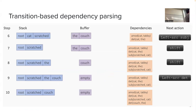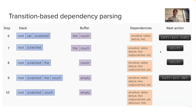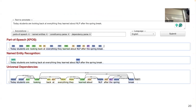We covered transition-based dependency parsing in detail, introducing three operations: left arc, right arc, and shift. Working with a stack and buffer, you apply these operations to collect dependencies and eventually reconstruct the full dependency tree. For the example sentence 'today students are looking back at everything they learned about NLP after the spring break,' we saw a dependency parse tree where some relations, like between 'learned' and 'break,' span quite far across the sentence.